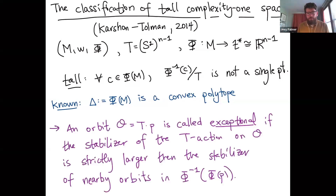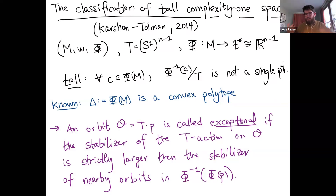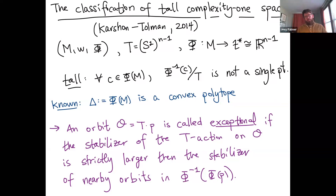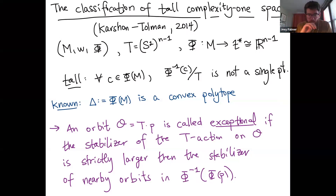An example of a non-tall system: CP^2 with the first-component S^1 action. If you take symplectic reduction at the last level, you get a single point — the pre-image is one point, and quotienting by the torus still gives one point. So CP^2 is not tall. Similarly in higher dimensions, around the boundary you might have points that are not tall; the tall condition requires all reductions to have dimension 2.